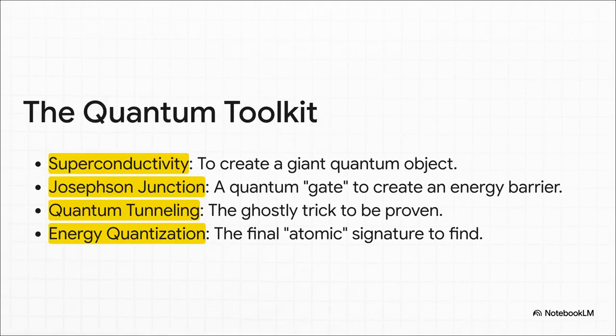So, what was in their quantum toolkit? Well, they started with superconductivity. That's a state where electricity flows with zero resistance, and it let them get billions of electrons to act in perfect unison, like a single giant quantum object. Then, they used something called a Josephson Junction, which is basically a tiny engineered weak spot in the circuit, to act as a quantum gate, creating that energy barrier they needed to test. Their whole mission was to use this setup to prove two things. First, that ghostly quantum tunneling, and second, energy quantization, the final unmistakable signature that they had built an artificial atom.